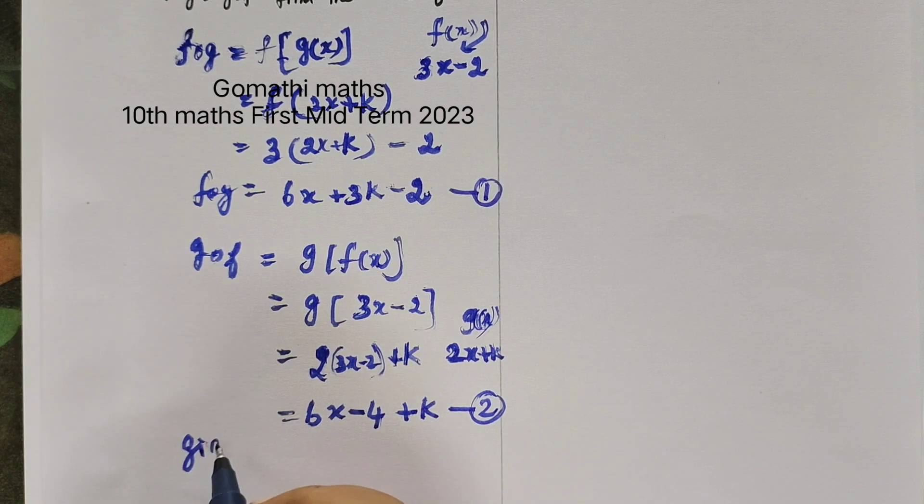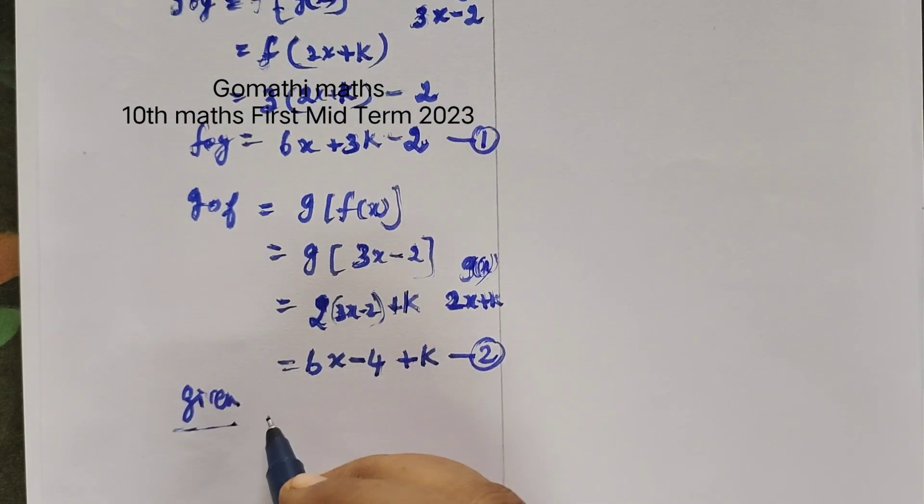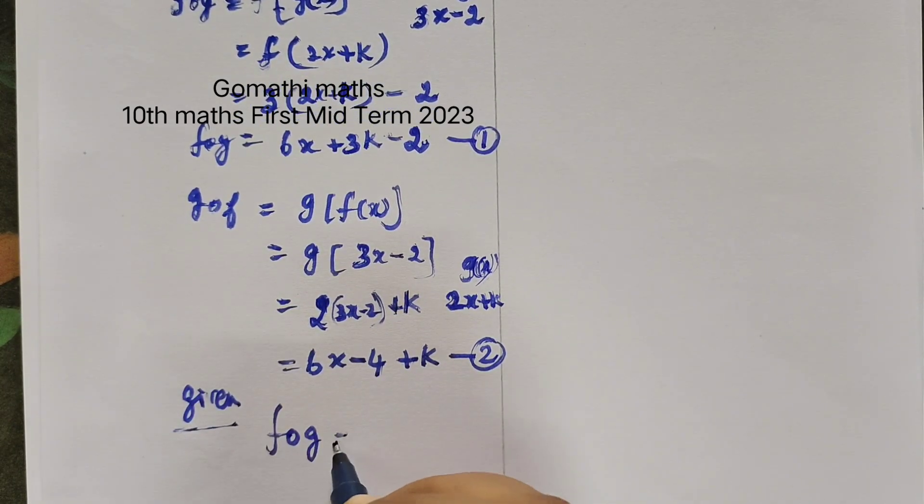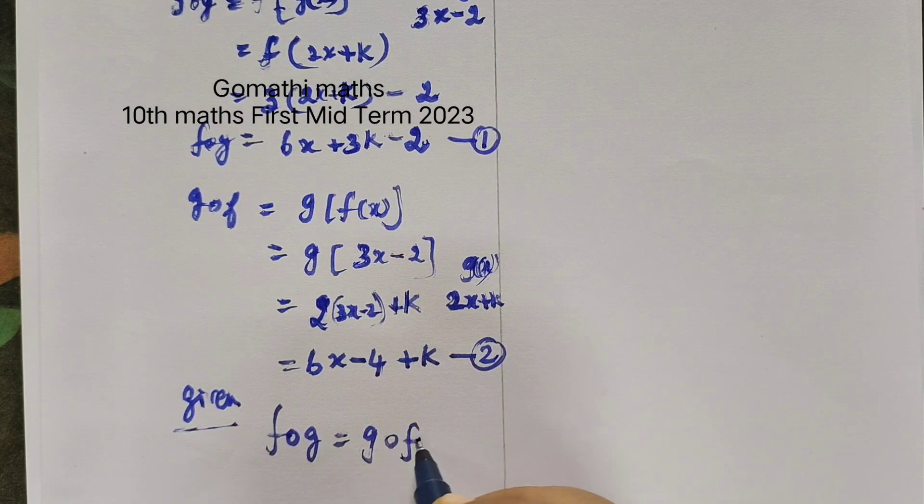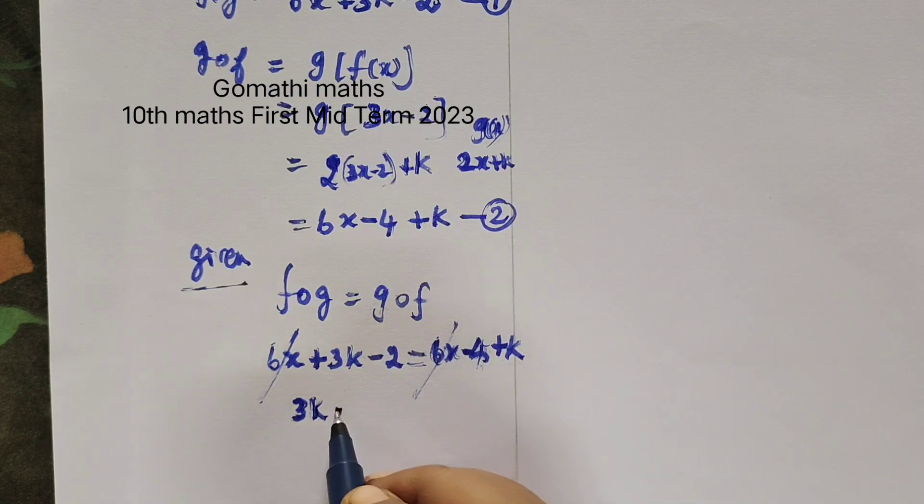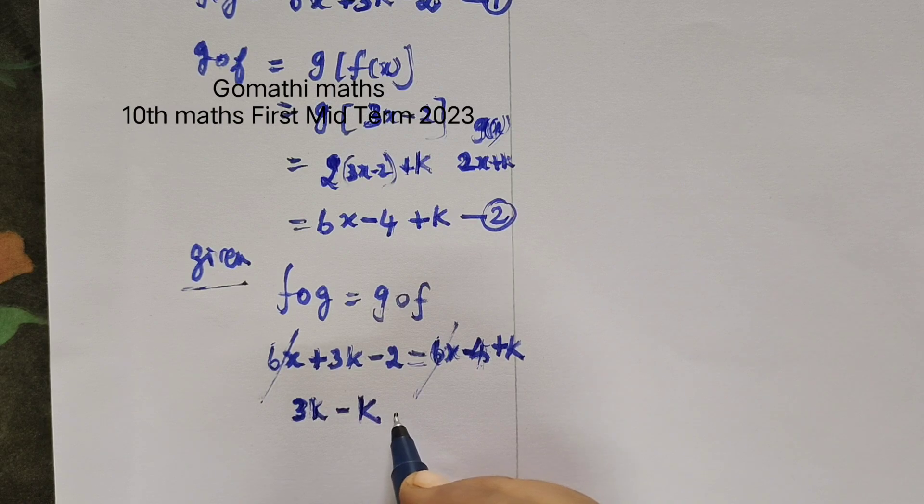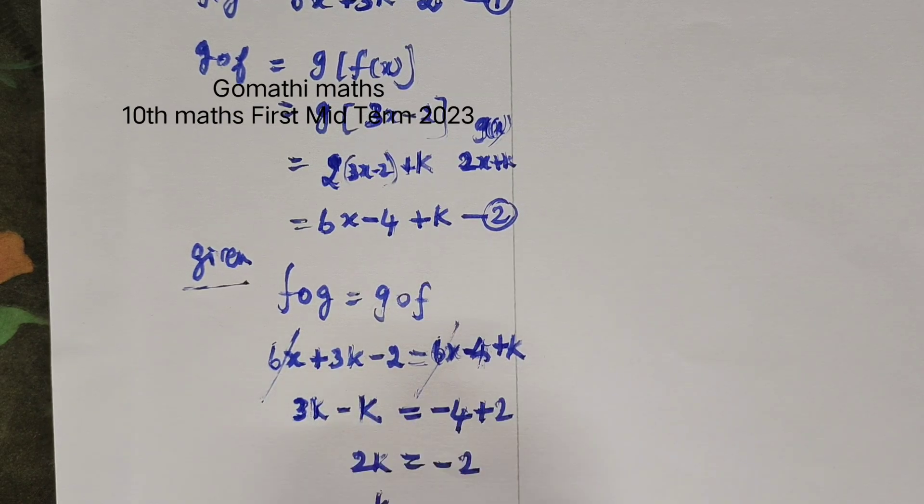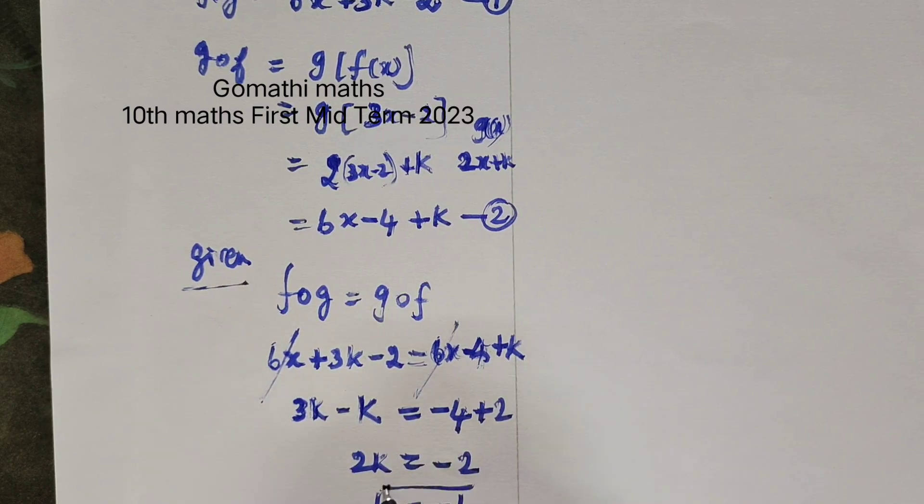What is given? Given, f∘g and g∘f equal. f∘g is 6x plus 3k minus 2, g∘f is 6x minus 4 plus k. Equal to, simplify k equal to minus 1.